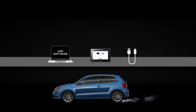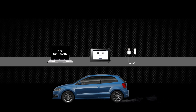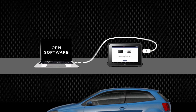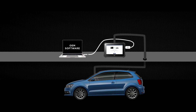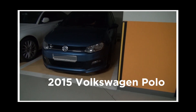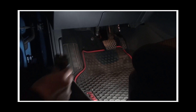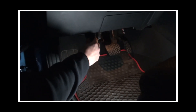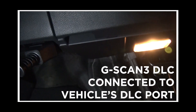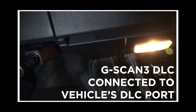Simply connect the PC and G-Scan3 with the USB cable and connect G-Scan3 to the prepared vehicle. Let's take a look at the demo. Here's a 2015 Volkswagen Polo with a 1.4 TDI engine. Connect the G-Scan3 DLC to the vehicle.